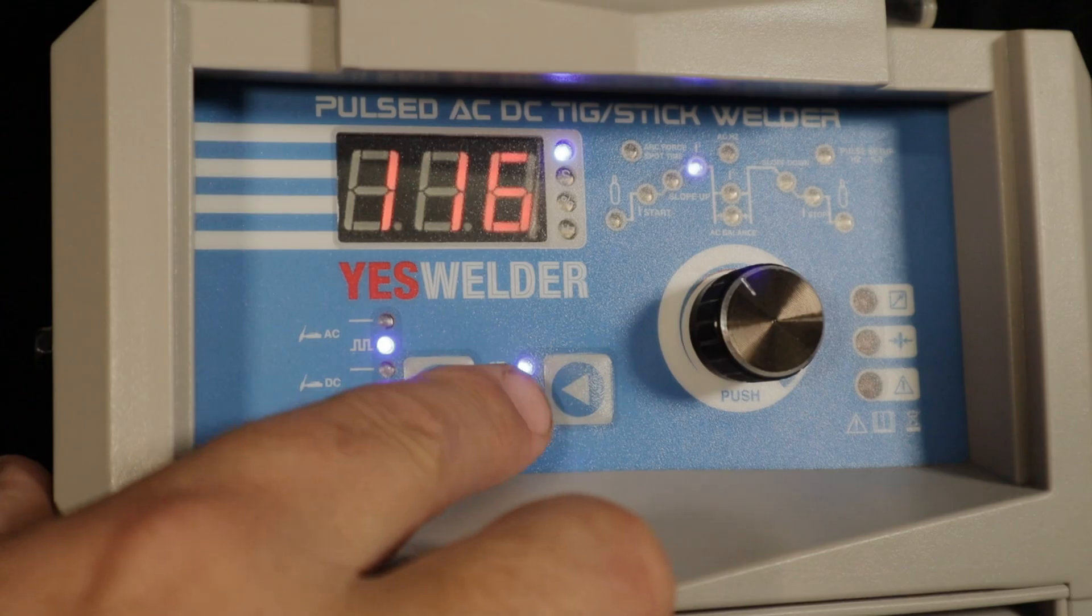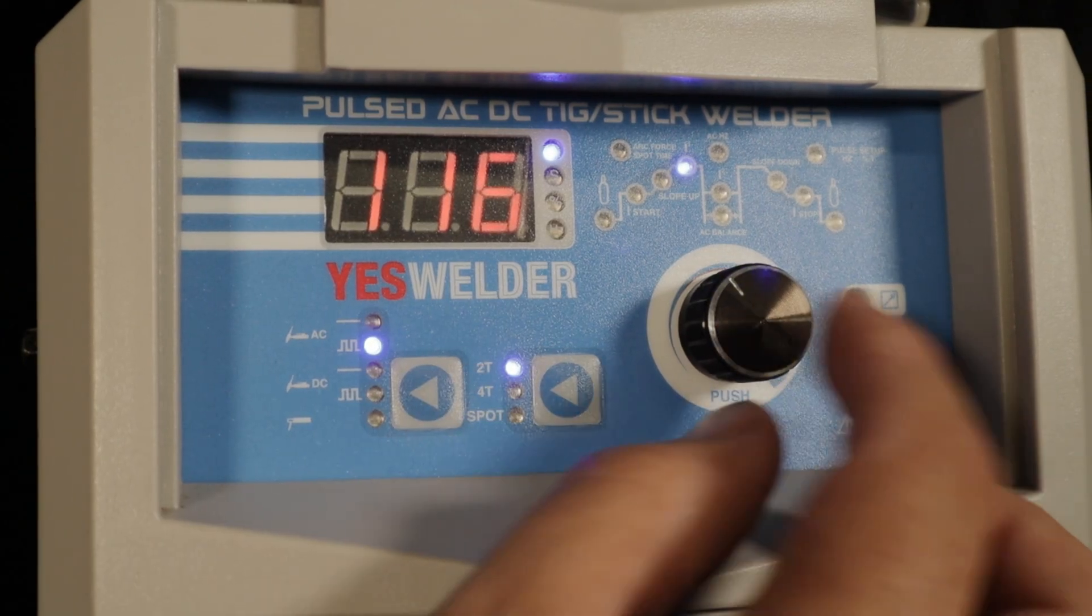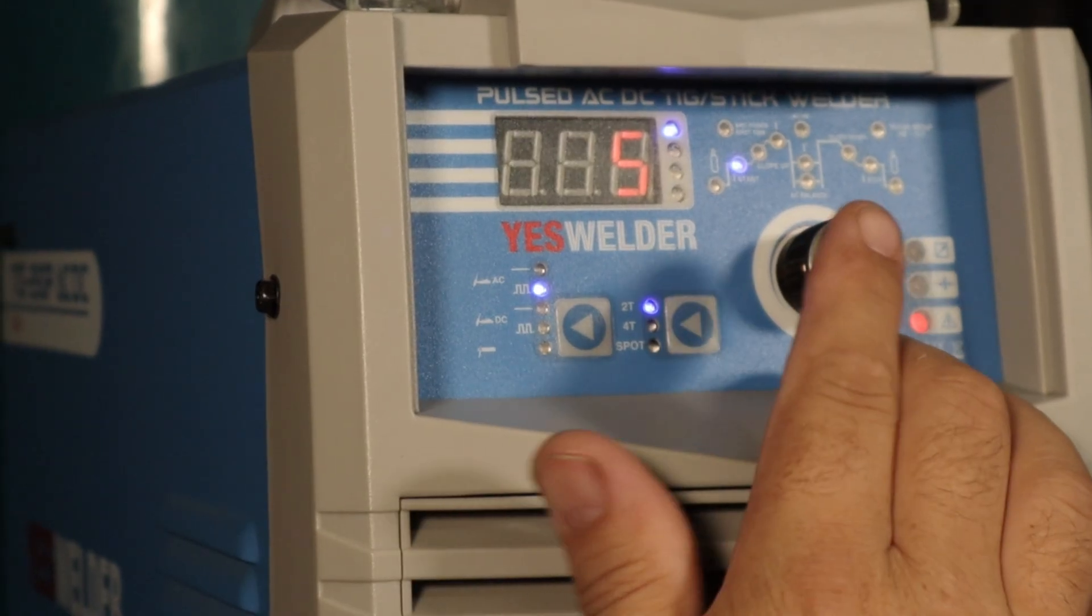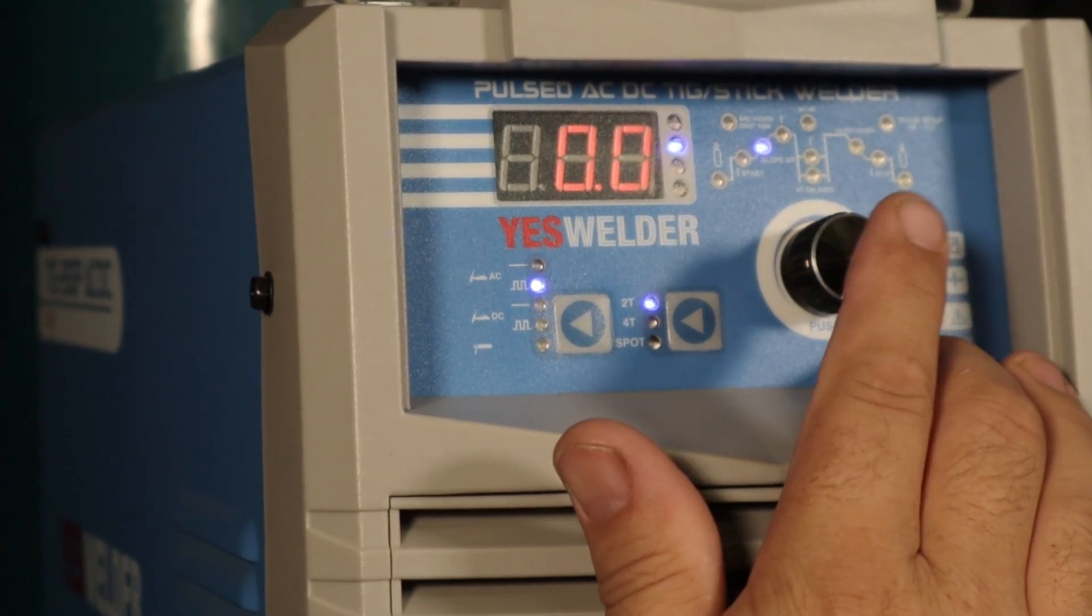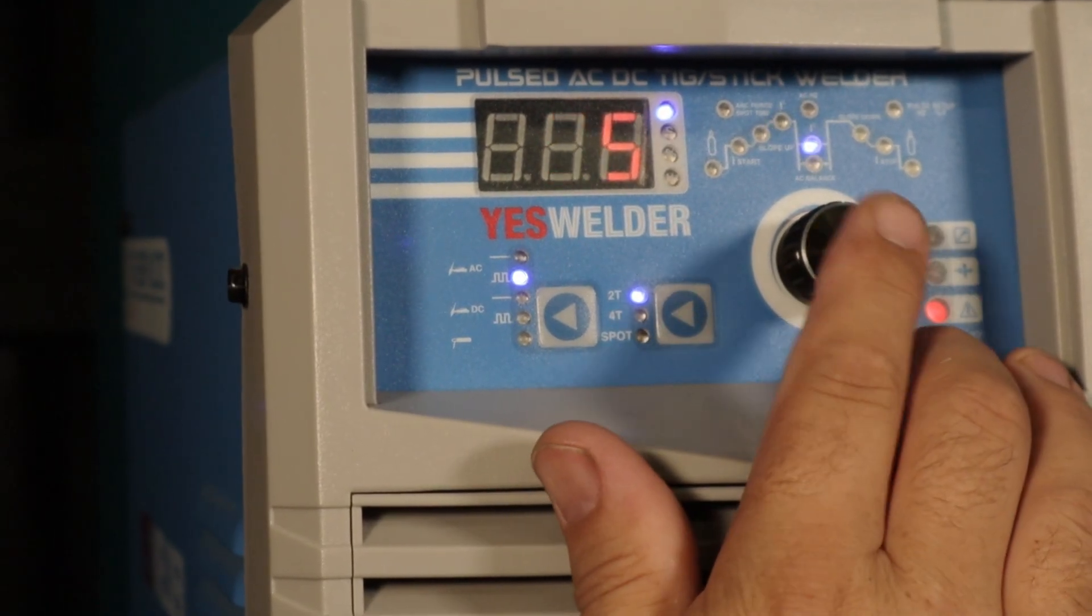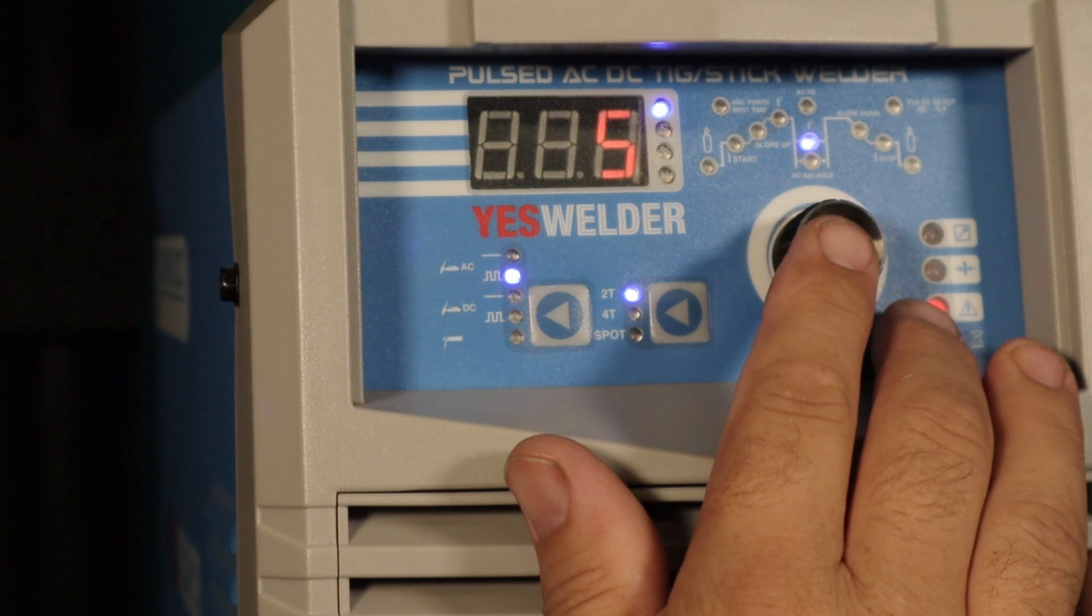I've got it to AC pulse, 2T because of the foot pedal, half a second pre-flow, 5 amps for the start amps, 0 upslope, 38 peak amps, and 5 amps for the base.